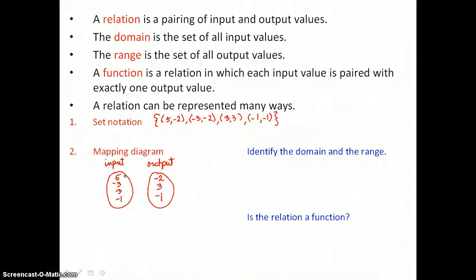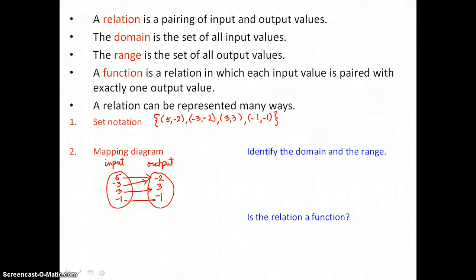Now I do the pairing: 5 is paired to -2, so I'll use an arrow to indicate that. -3 is also paired to -2. 3 is paired to 3, and -1 is paired to -1.